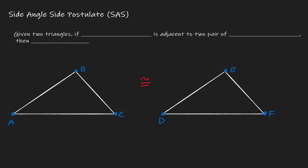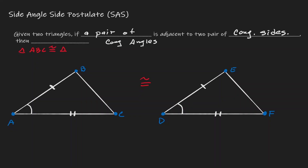Let's state that postulate. What this postulate says is that given two triangles, if a pair of congruent angles — in this case, let's call them A and D, so these two angles are congruent — and that pair of congruent angles is adjacent to two pairs of congruent sides — let's make AB congruent to DE and AC congruent to DF — if this is the scenario, where you have a congruent angle within two congruent sides, then that's enough information to conclude that triangle ABC is congruent to triangle DEF.